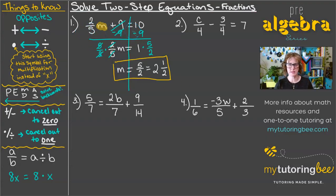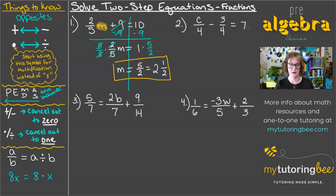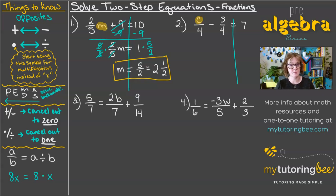So with problem 1, we did just the basics — undoing that addition first, then undoing that multiplication. I'm going to show you in problem 2 a different method called clearing fractions. We've got c/4 minus 3/4 equals 7. When I see more than one fraction in an equation, I really like to get rid of those fractions so that I'm just working with whole numbers. We do that by multiplying each term by the same number — in this case 4, since 4 is in the denominator of both fractions. That's going to cancel out each denominator.